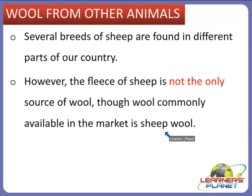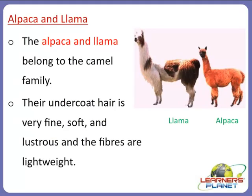Wool is the fiber derived from the fur of animals, principally from sheep, but the hair of certain species of other mammals such as goats, alpaca, and rabbits may also be considered or called as wool. Let us see which other animals provide us wool and animal fiber.